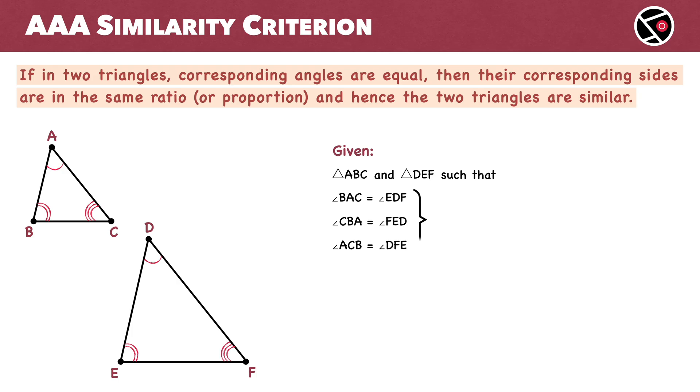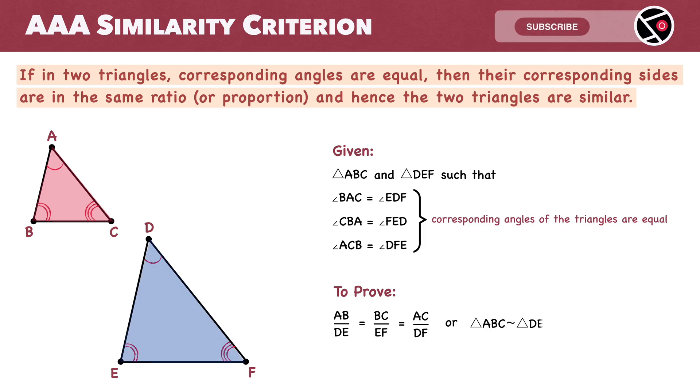All three sets of corresponding angles in these two triangles are equal. Our goal is to prove that corresponding sides of these triangles are in the same ratio: AB to DE equals BC to EF equals AC to DF, or triangle ABC is similar to triangle DEF.